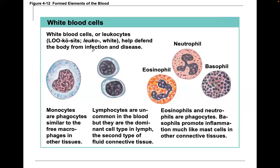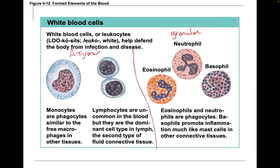White blood cells are divided into granular and agranular types. The granular term refers to granulations visible in the cytoplasm. In eosinophils, neutrophils, and basophils, you can see a nucleus and the cytoplasm is very grainy and granular. In agranular cells, the cytoplasm looks clear and not as grainy.